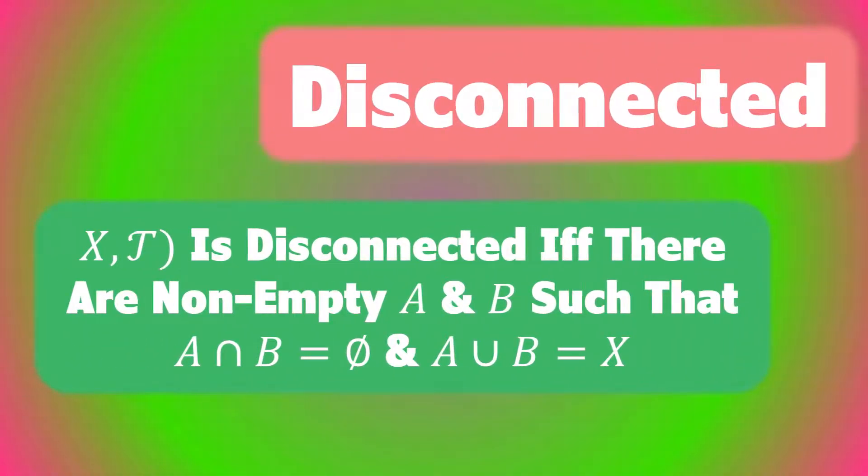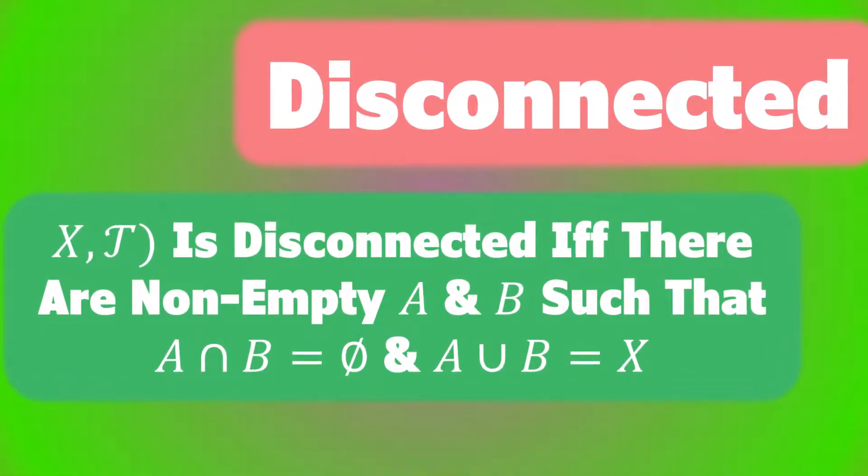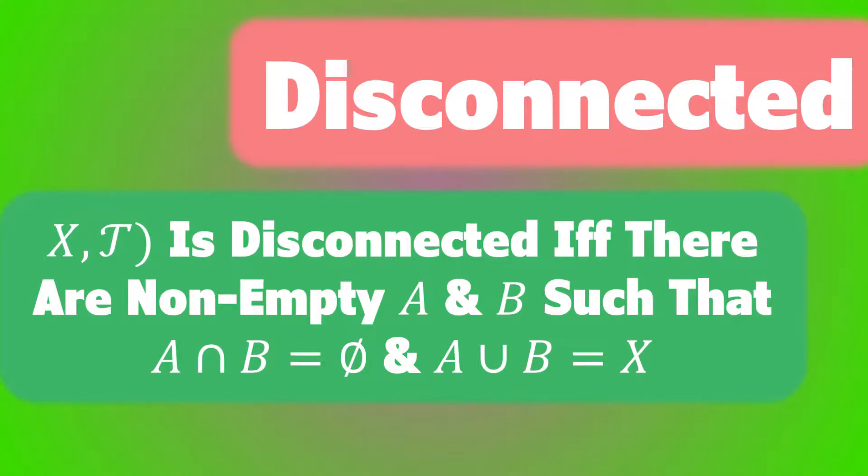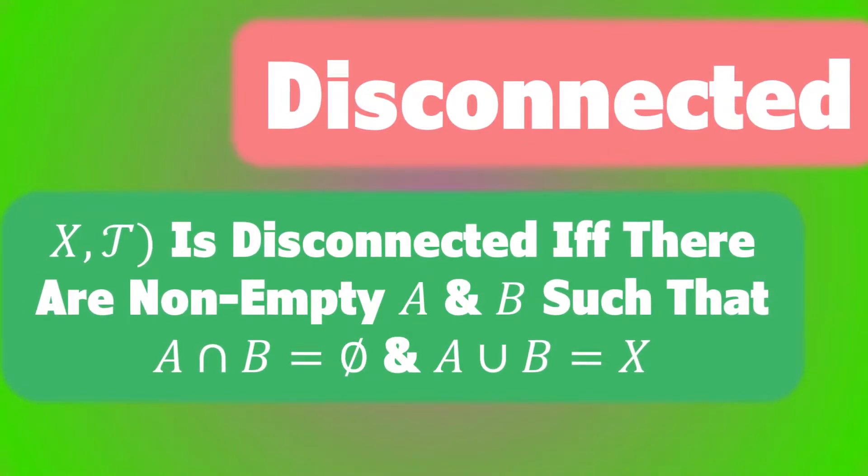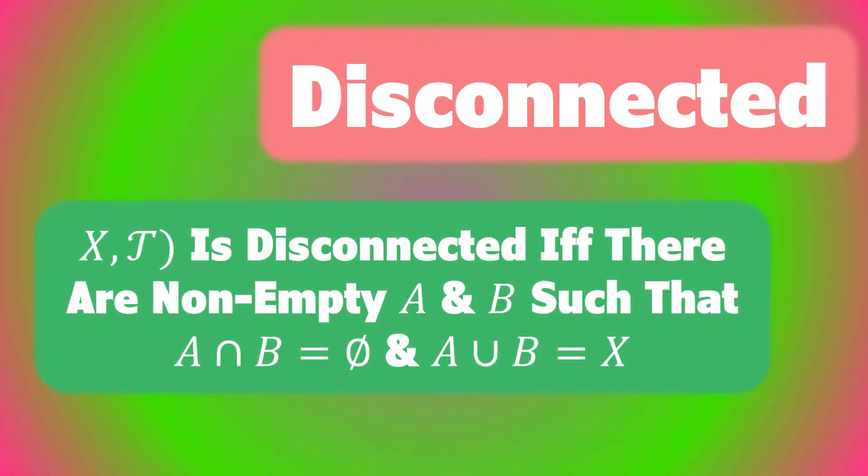It follows that a topological space X with T is disconnected if and only if there are non-empty sets A and B such that the intersection of A and B is empty and the union of A and B is X.